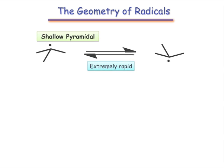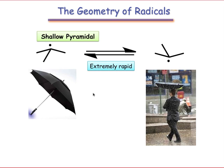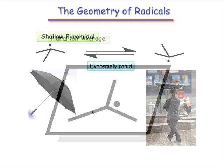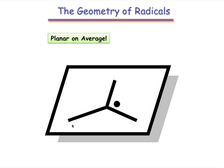The geometry of radicals can vary from planar to slightly pyramidal. However, pyramidal radicals rapidly invert through a process analogous to the inversion of an umbrella. Thus, a time-average picture of radical geometry treats the radical as planar and sp2 hybridized, and places the unpaired electron in a 2p atomic orbital.